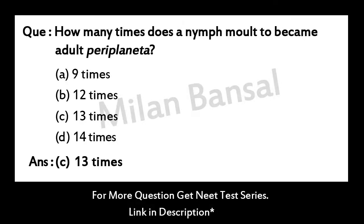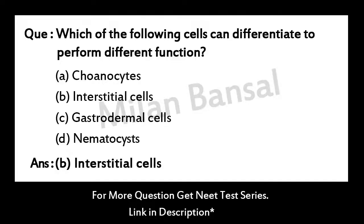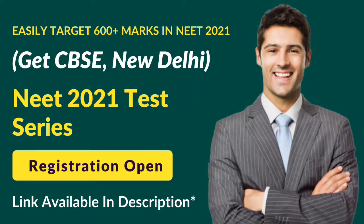Question number four: how many times does a nymph molt to become an adult Periplaneta? Question number five: which of the following cells can differentiate to perform different functions? If you want more important questions, you can get the link in the description of the video.